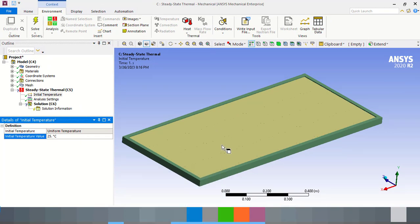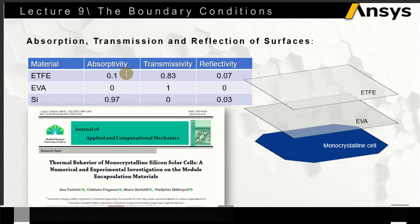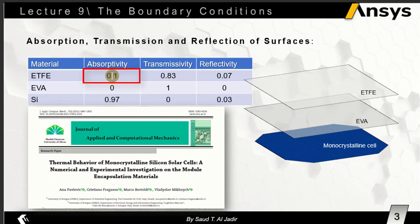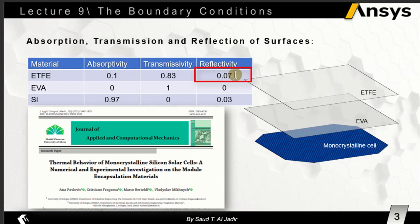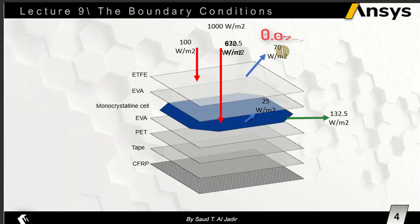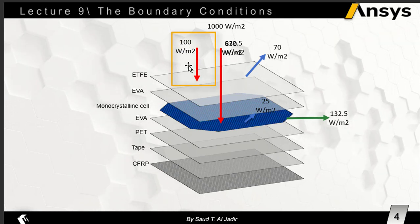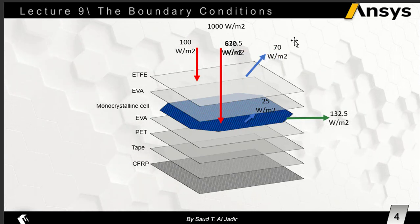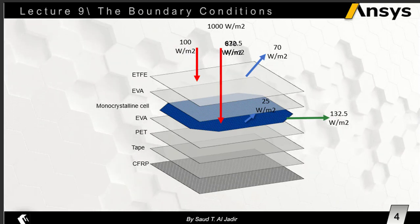The first layer is the ETFE layer. At the ETFE layer, 10% of the incident solar radiation is absorbed — so 10% of 1000 watts per meter square equals 100 watts per meter square. Also, 7% will be reflected, which equals 70 watts per meter square. We will only set a boundary condition for the absorbed heat flux, not the reflected.